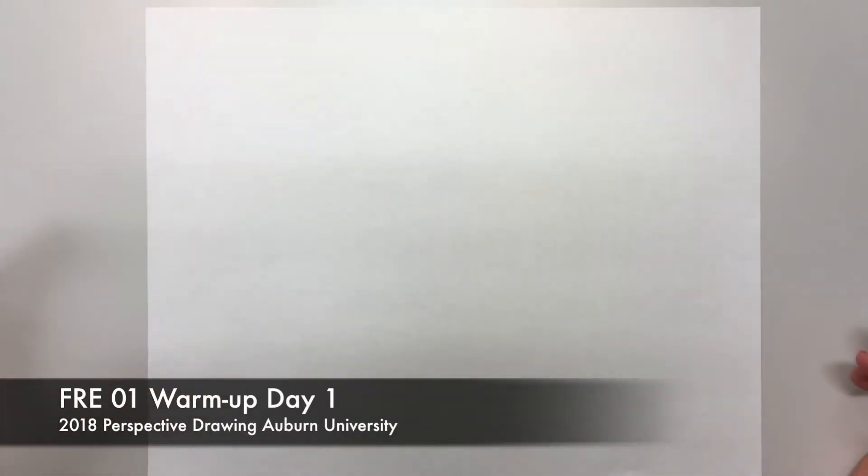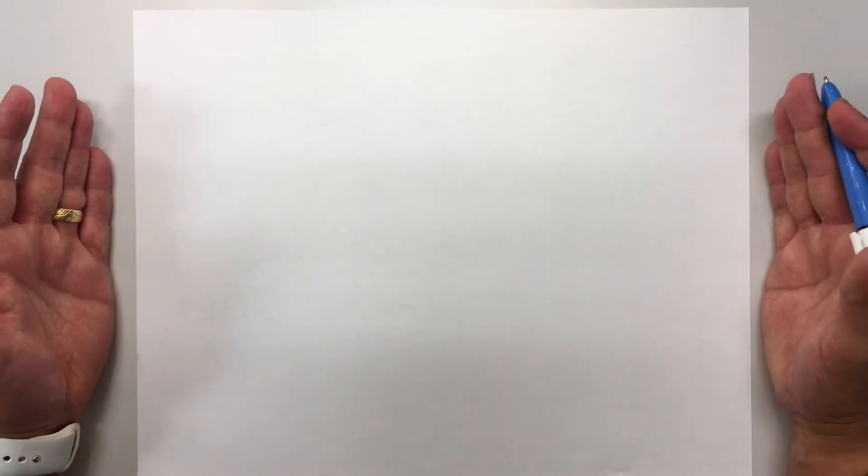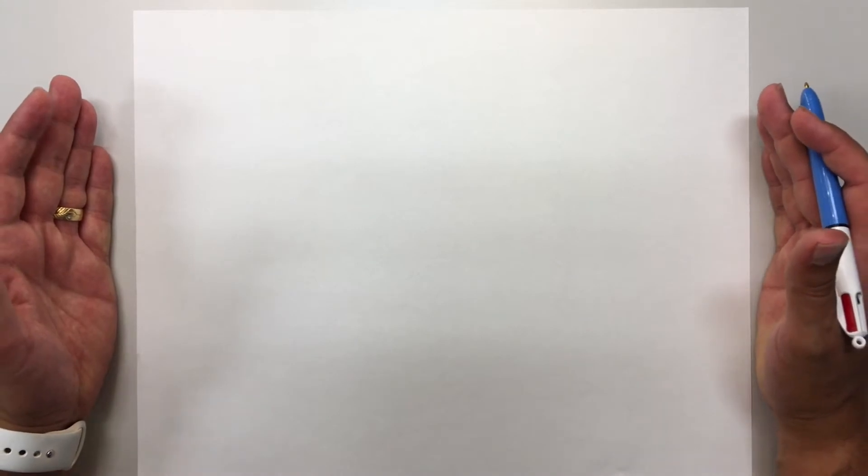The first thing that I want you to think about is the mechanics of your body. What I do not do and what I do not want to see you do is tape your paper down because that limits. If I want to draw a straight line across the center of this page, I'm not going to draw it with the page sitting perpendicular to me.